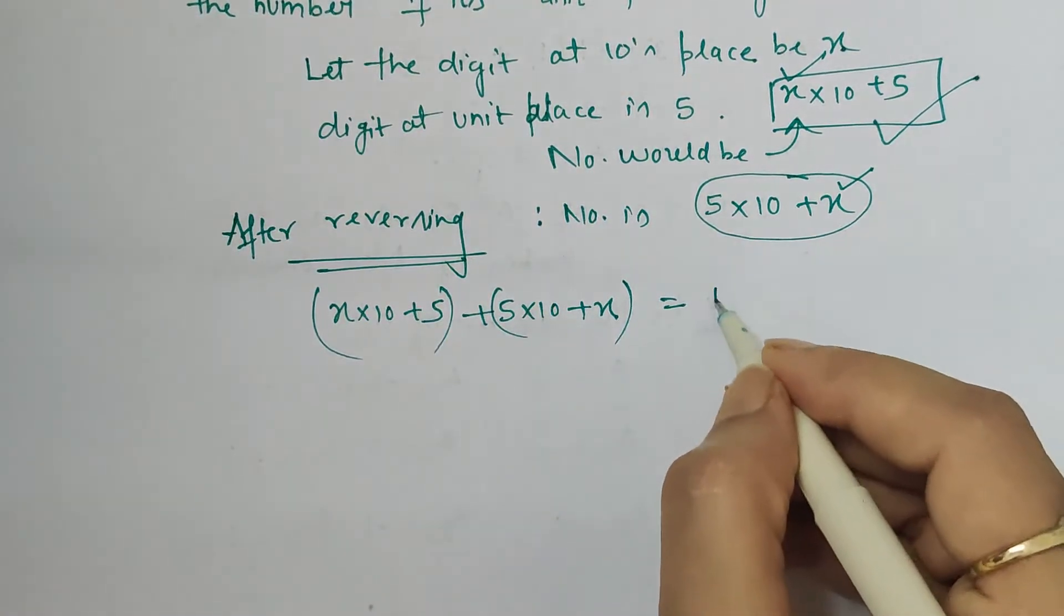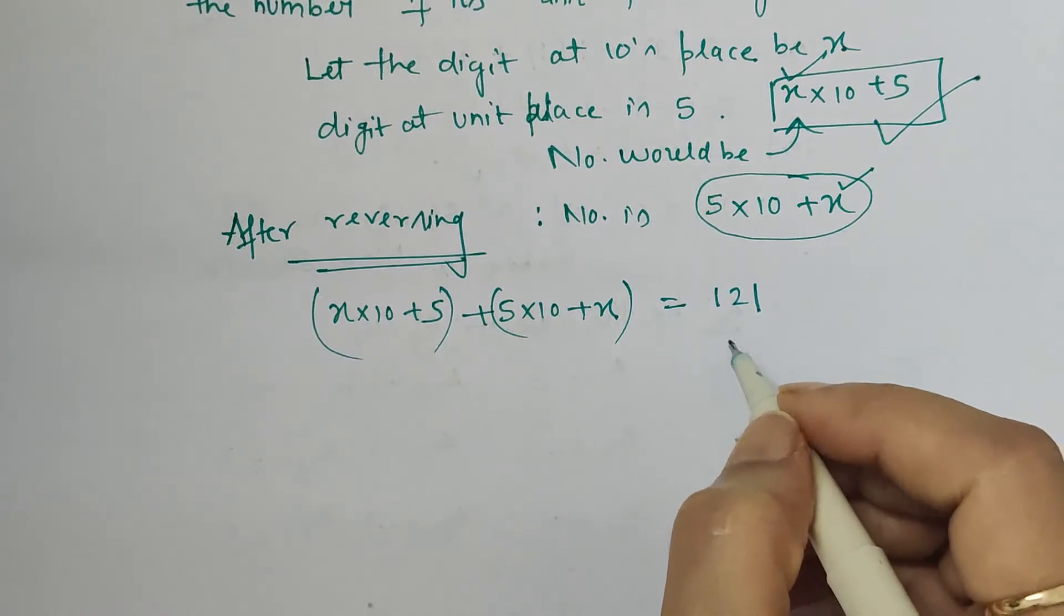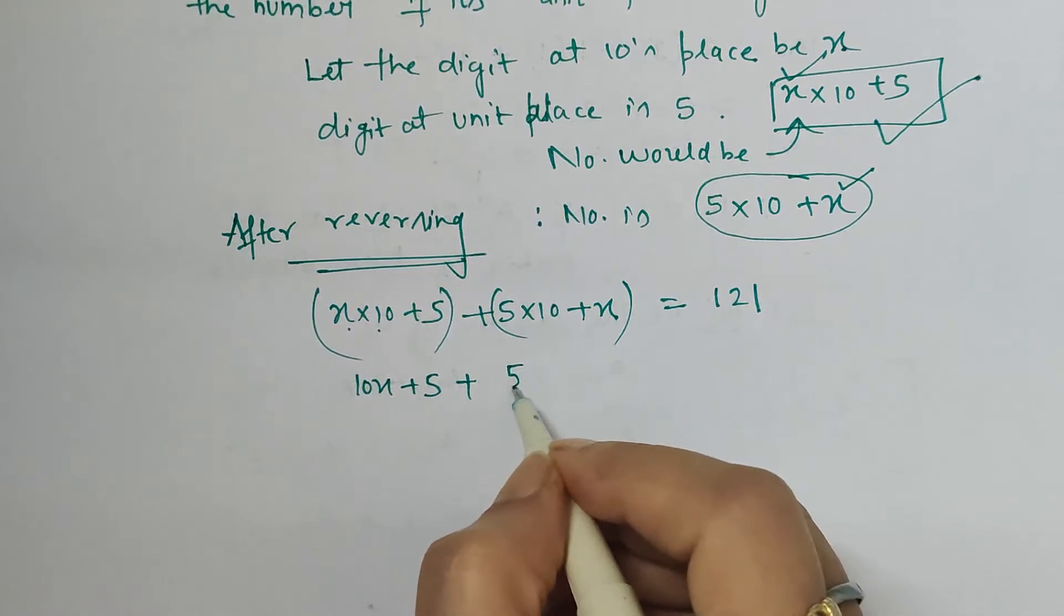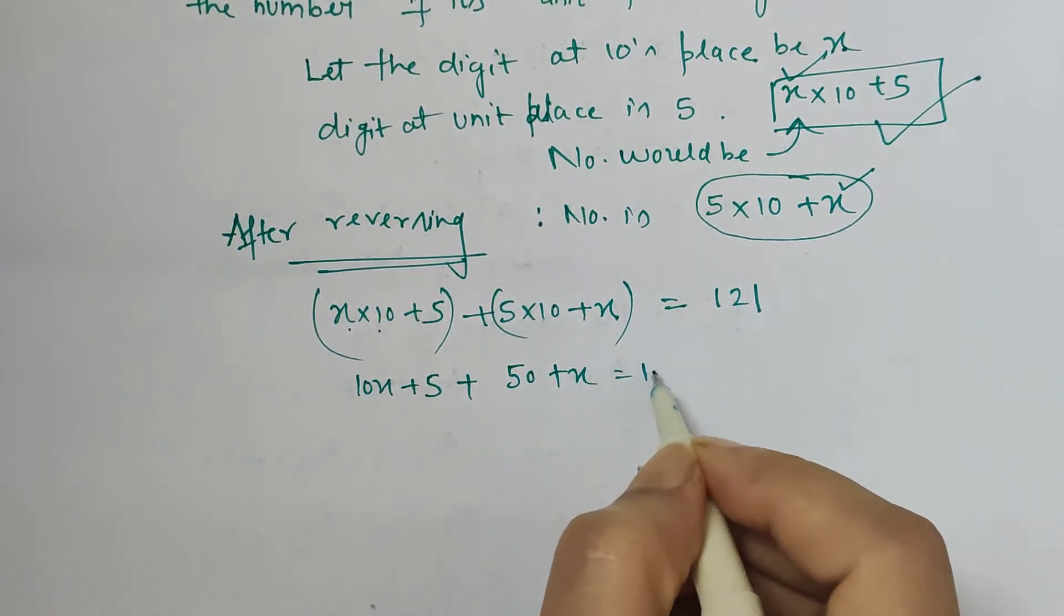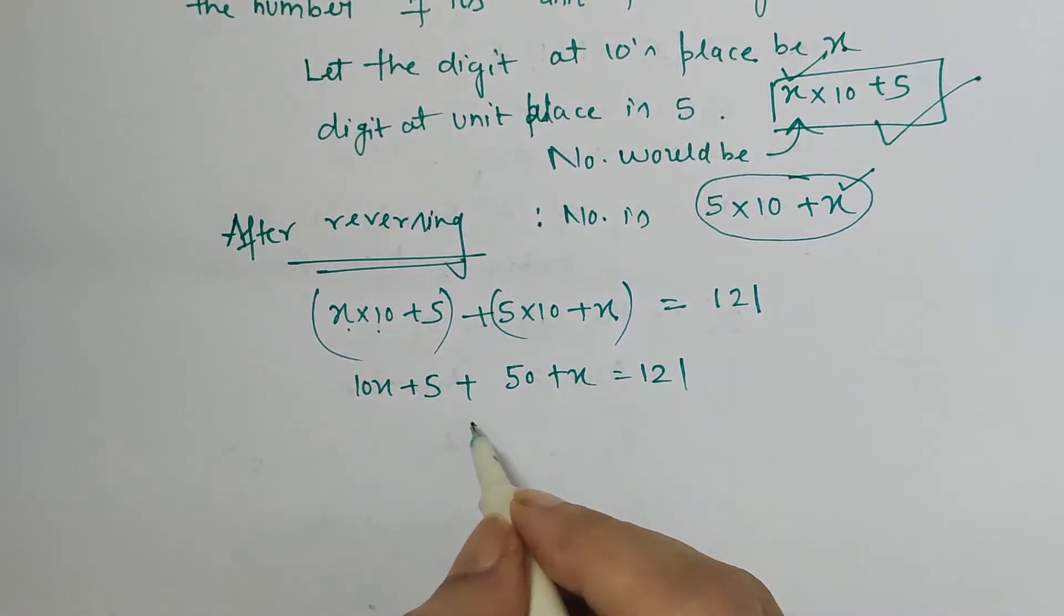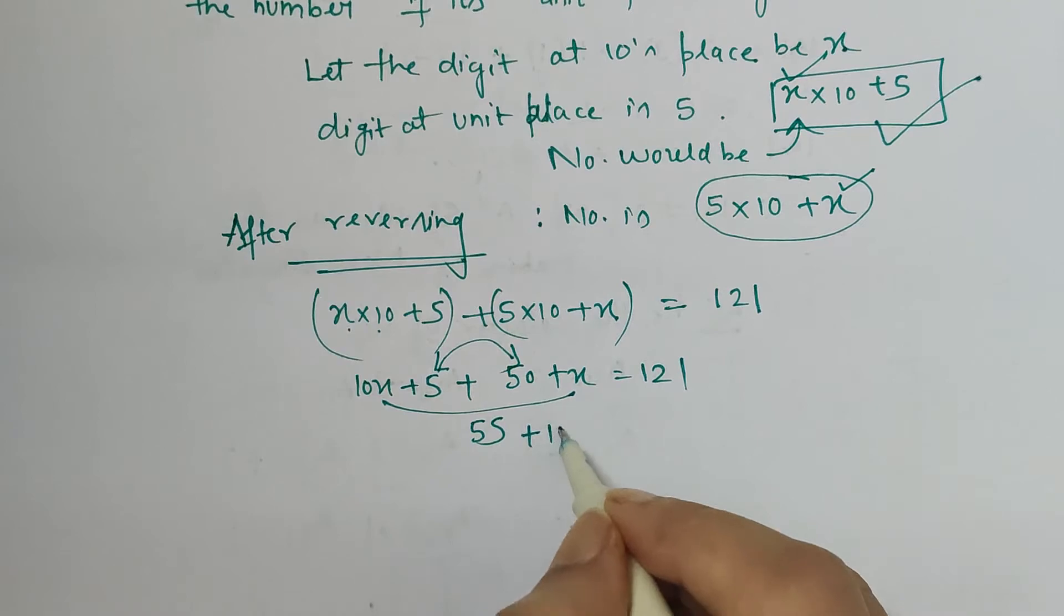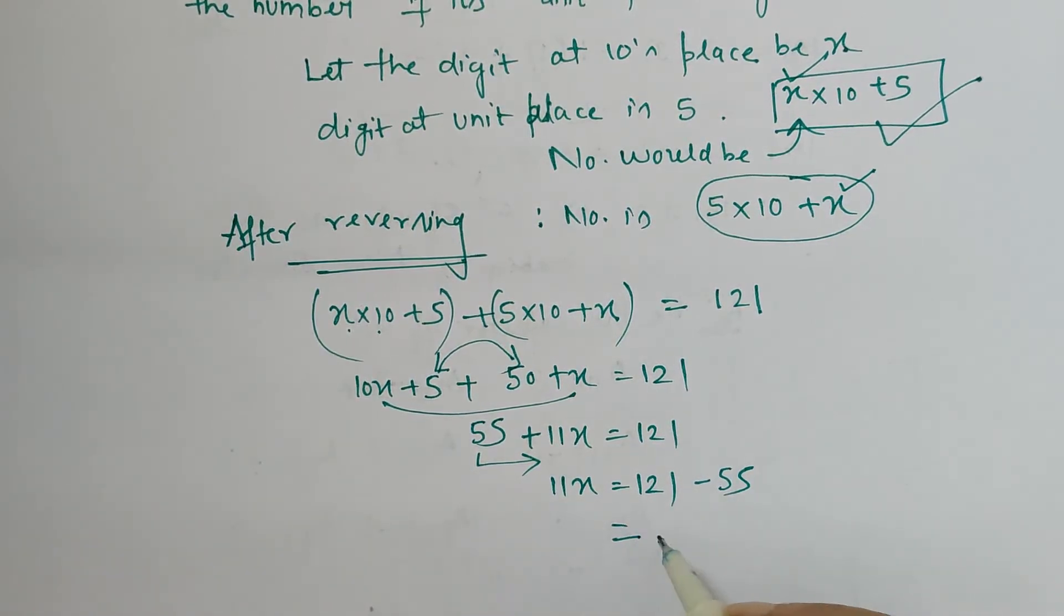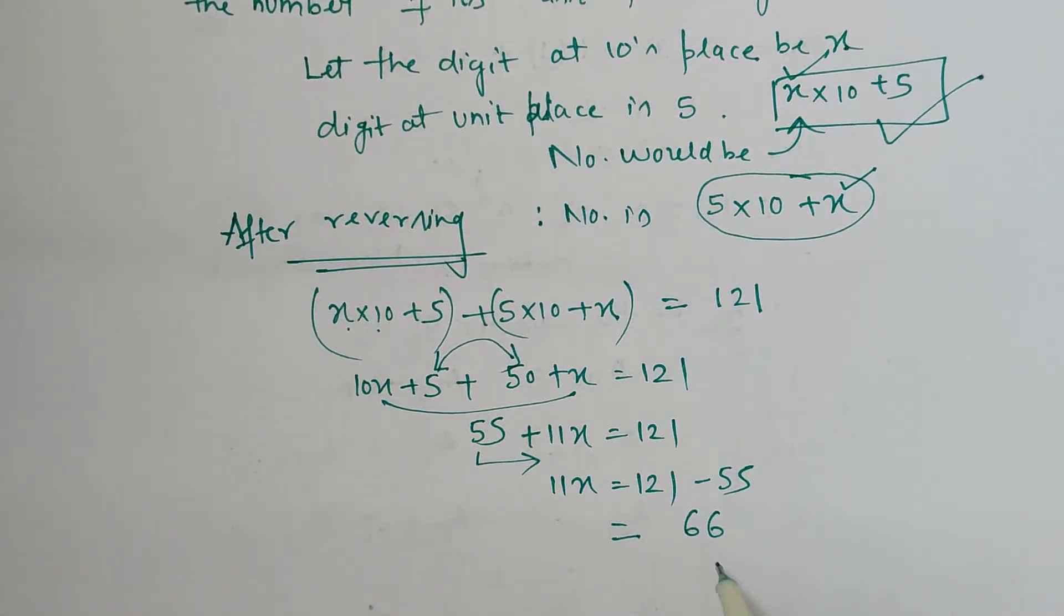This can be written as 10x plus 5 plus 50 plus x is equal to 121. Now this is 55, and 10x plus x is 11x equals 121. Now shift this 55 to right-hand side, so 11x equals 121 minus 55, which is 66.